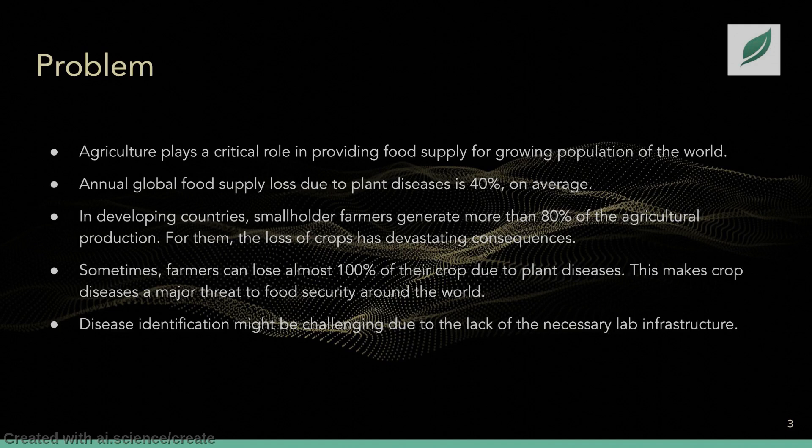Agriculture plays a critical role in providing food supply for a growing population of the world. One of the biggest problems in the agriculture sector is the loss of crops due to plant diseases. Research shows that on average, annual global food supply loss is 40%. But in developing countries where more than 80% of agricultural production is generated by small farms, the loss of crops can be as big as almost 100% for some of their products.